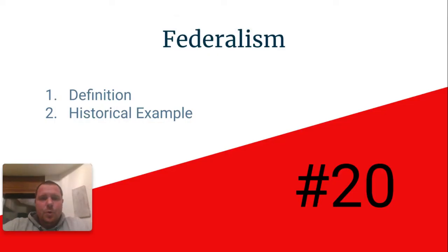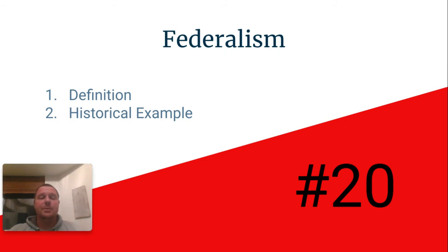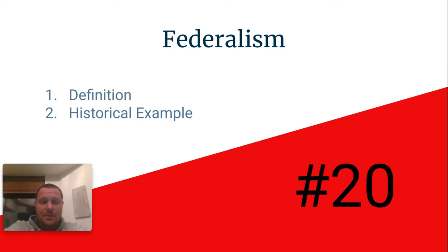EOC review term number 20 is federalism. Every student in my class knows federalism as the answer to everything. Federalism is one of the six principles of the U.S. Constitution. It's arguably the most foundational principle of the Constitution. It simply means that power is divided between a national government and state and local governments. The power is not equal, but the power is shared.